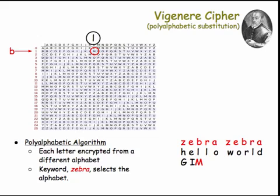The next L, however, we're using a different alphabet. In this case, we're using the R alphabet, so that L encrypts to C. Notice the LL pattern has disappeared in the cipher text.